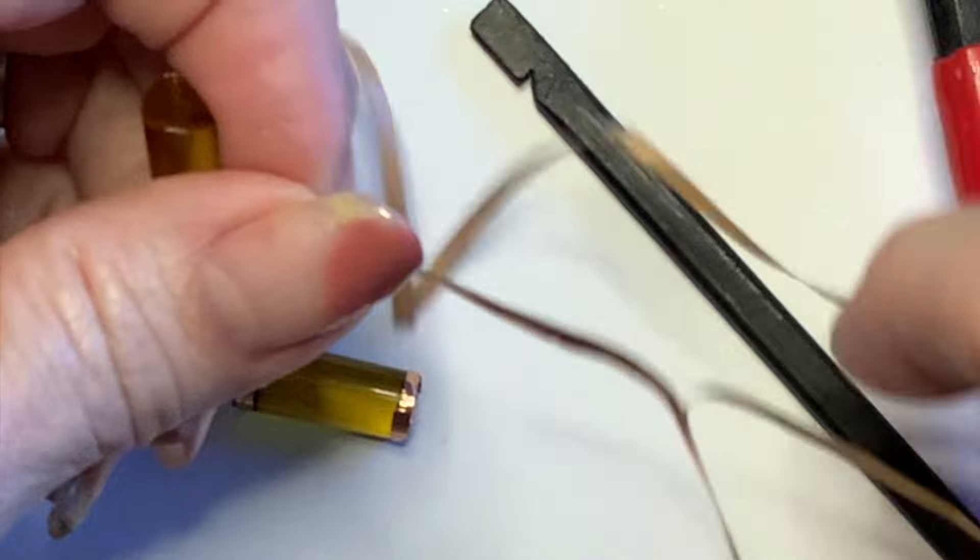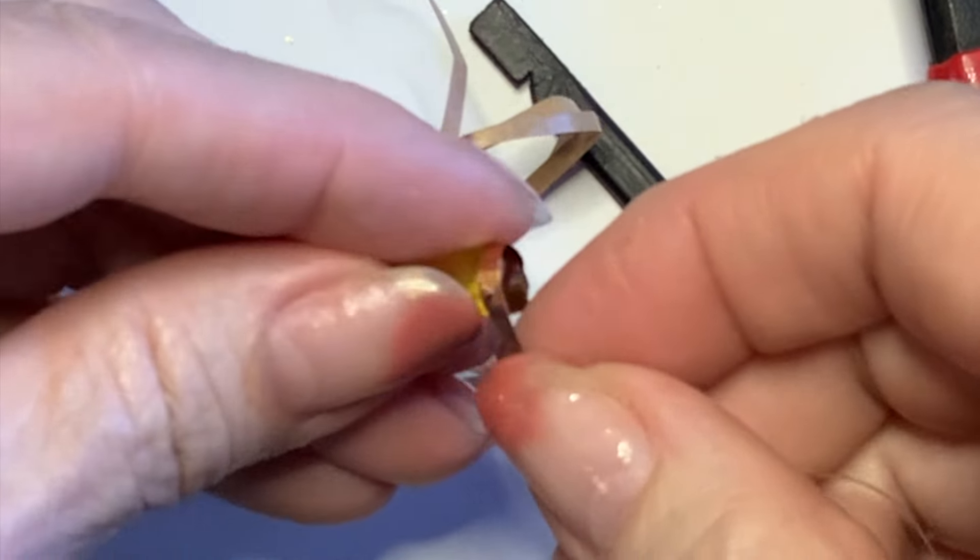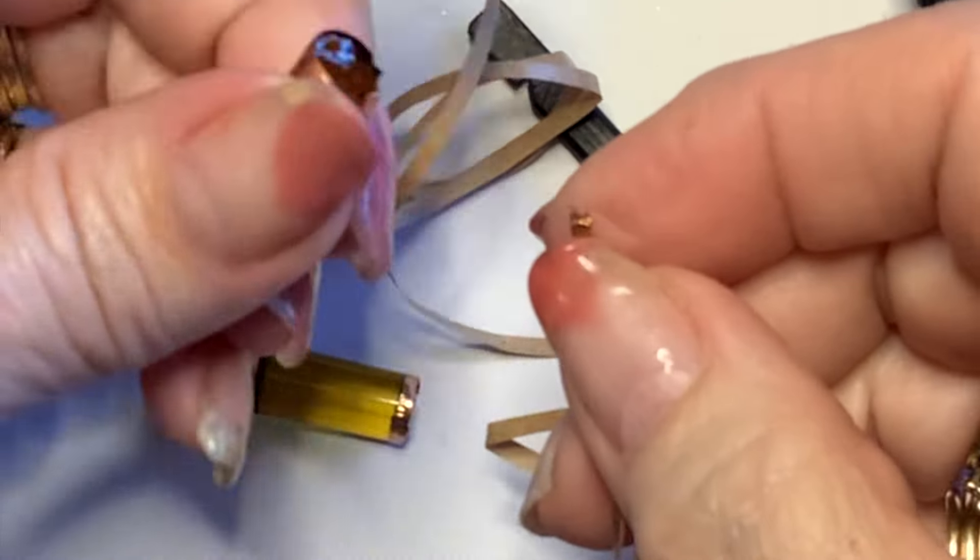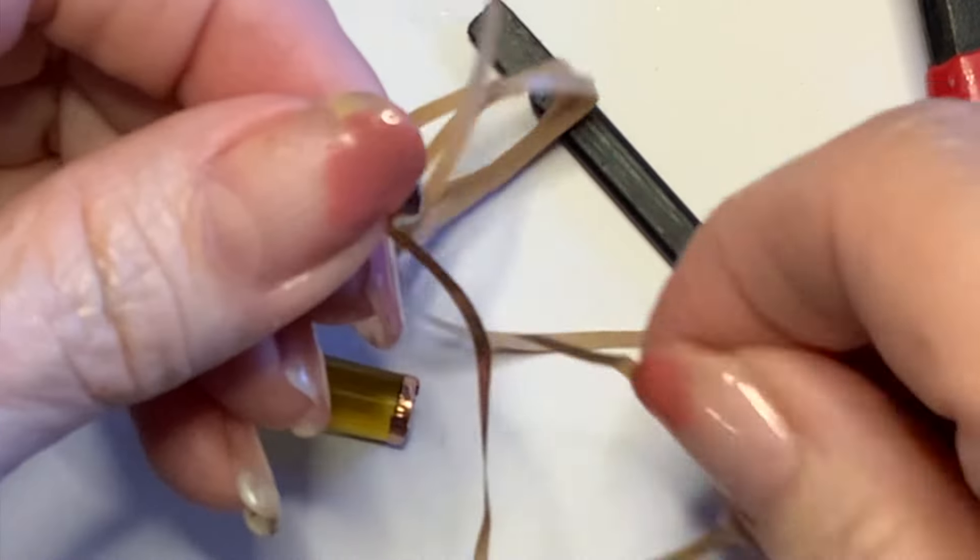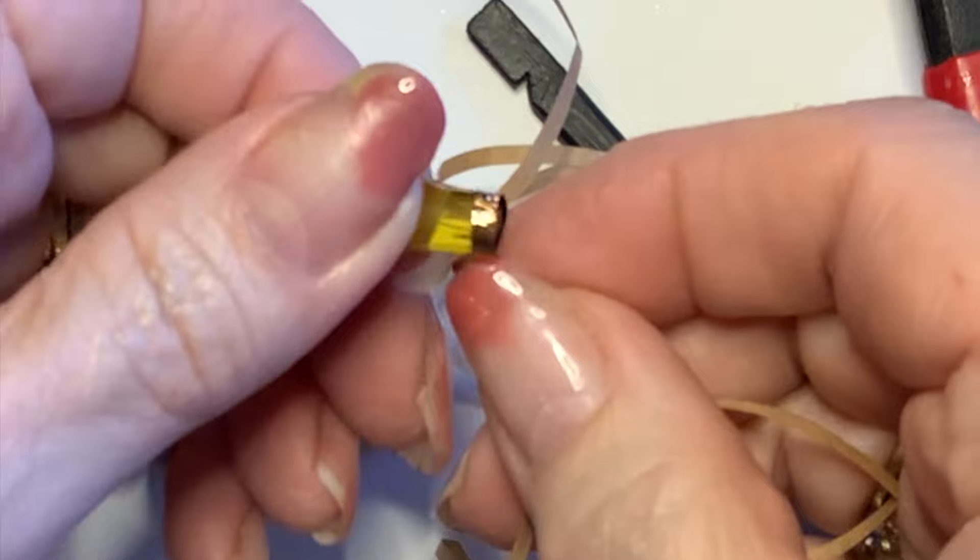When I'm putting the foil on, I'm straddling the crack a little bit so some of the foil will actually wrap around the end of the rod, kind of like making a little top for it.